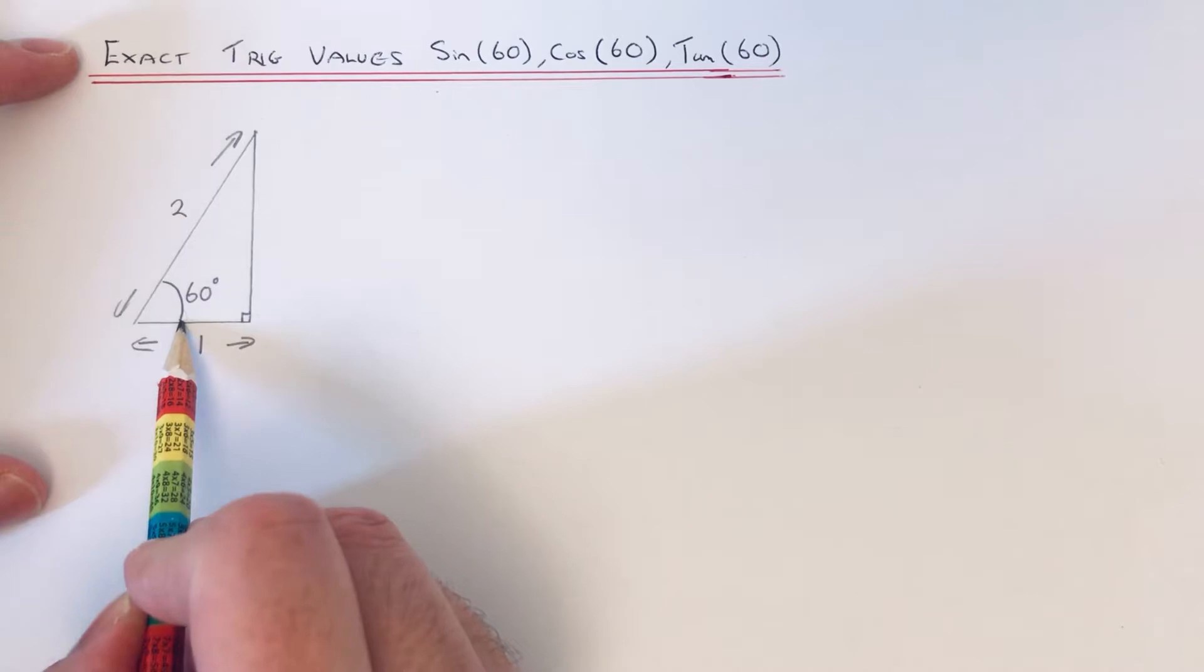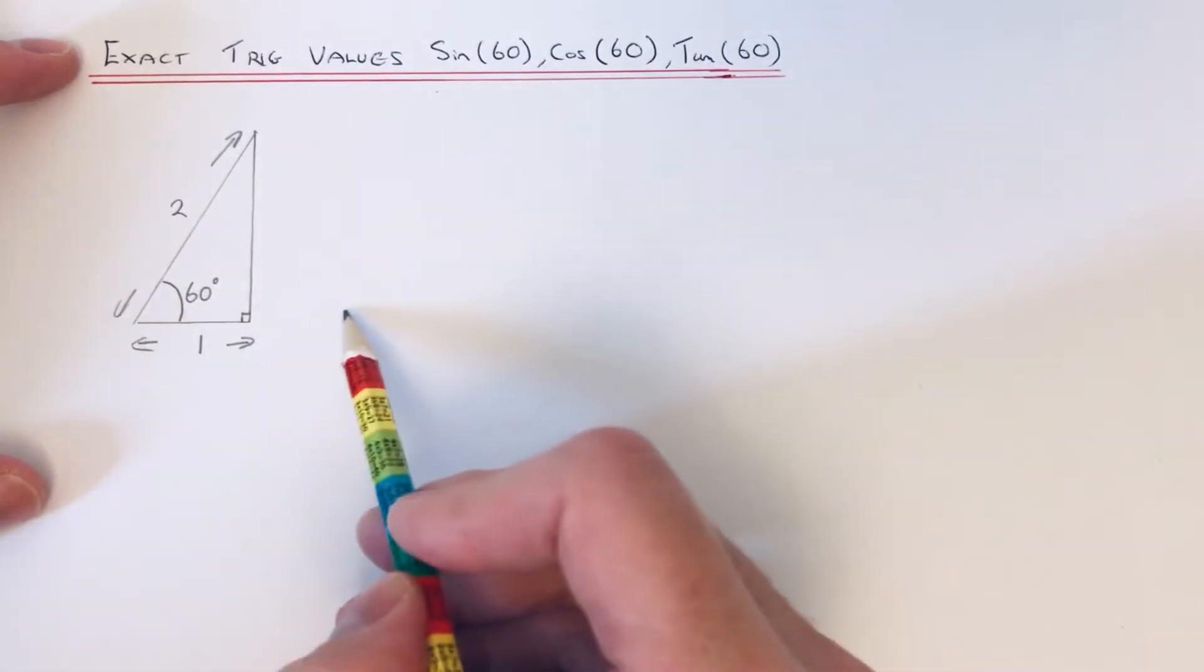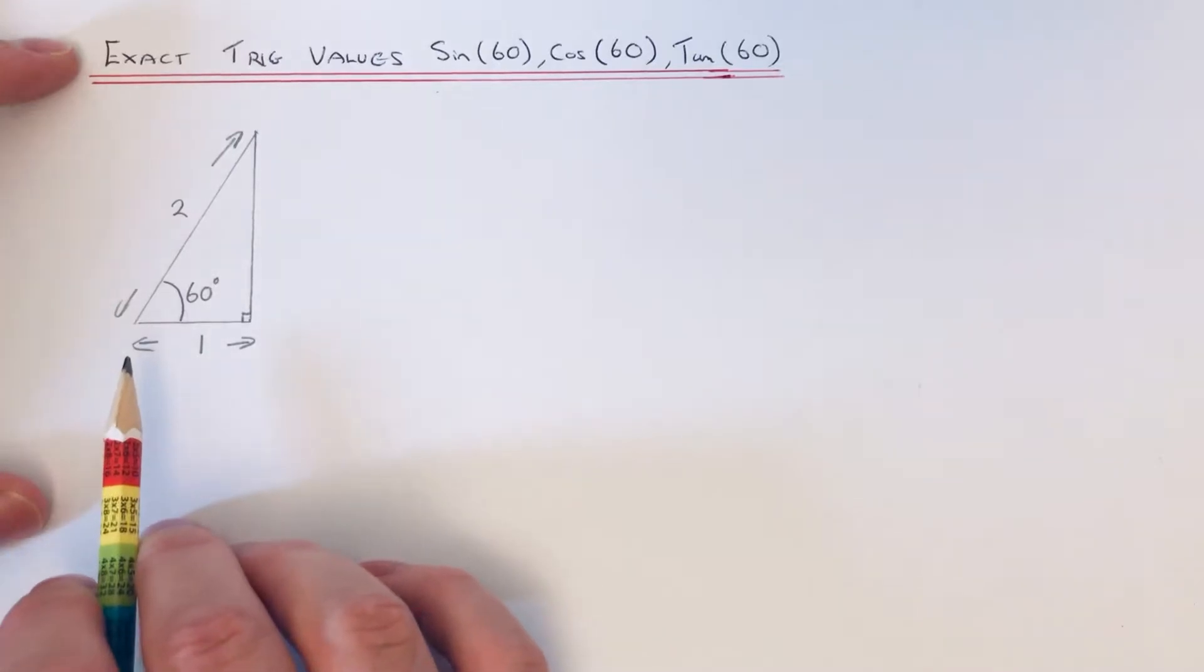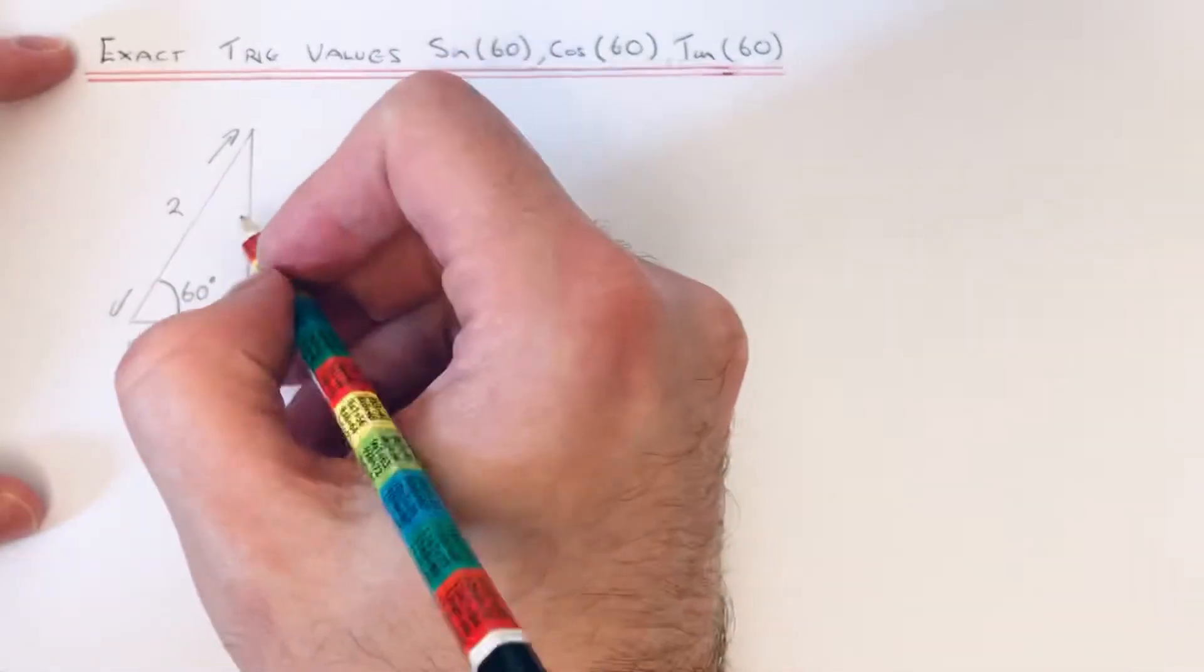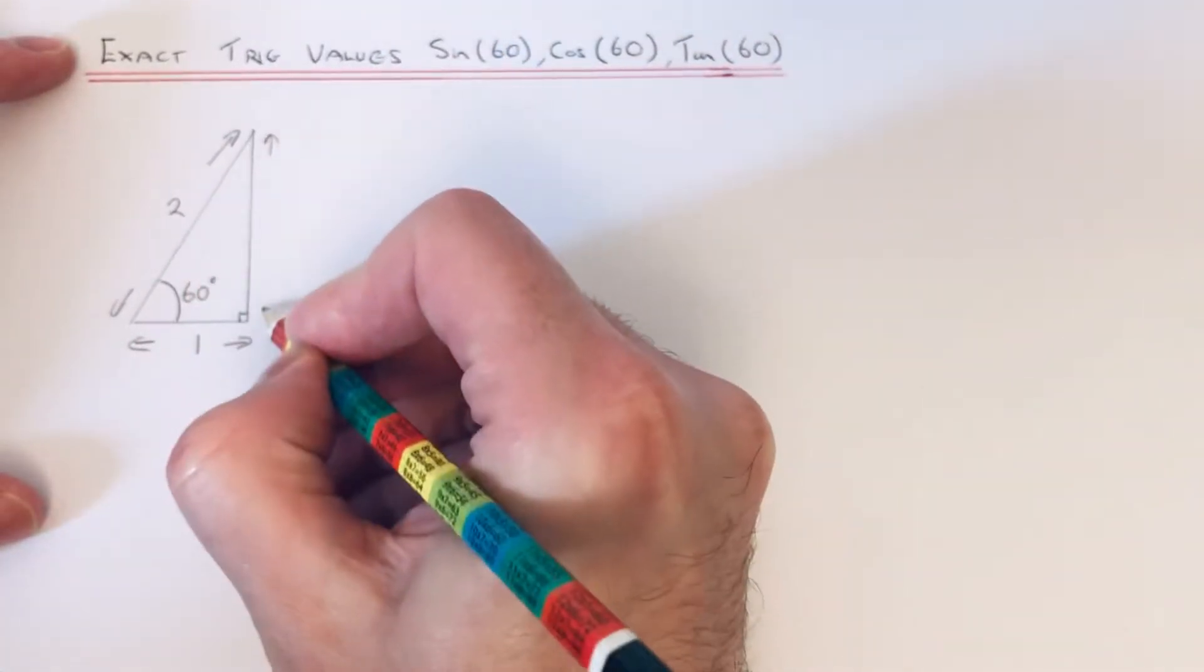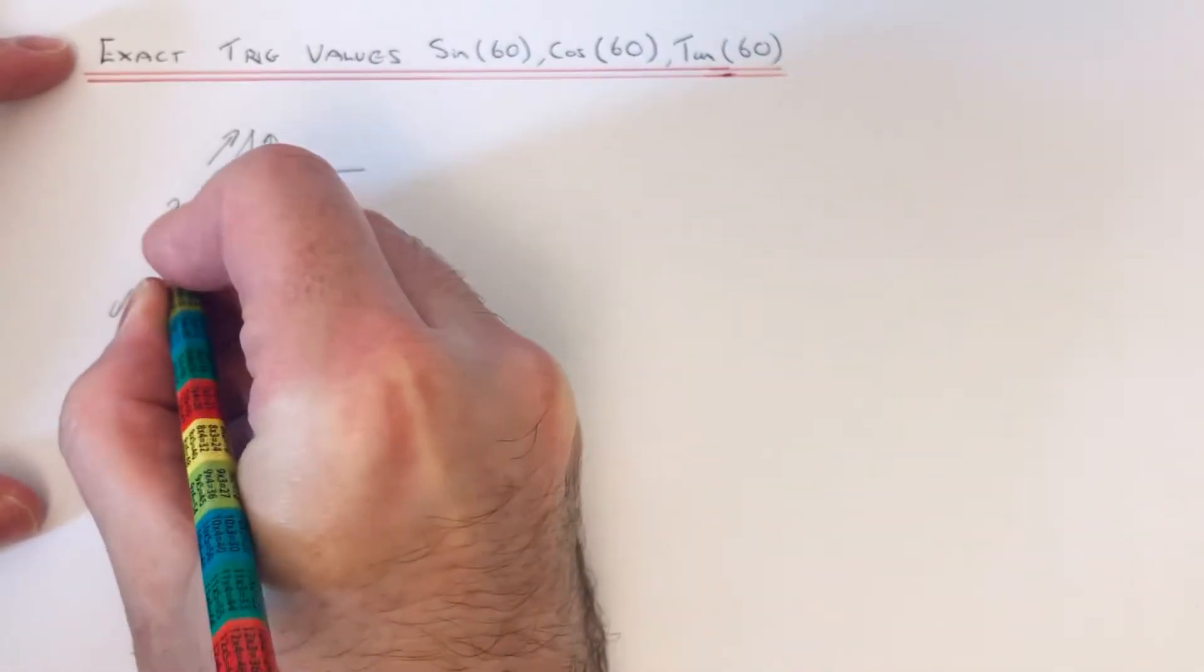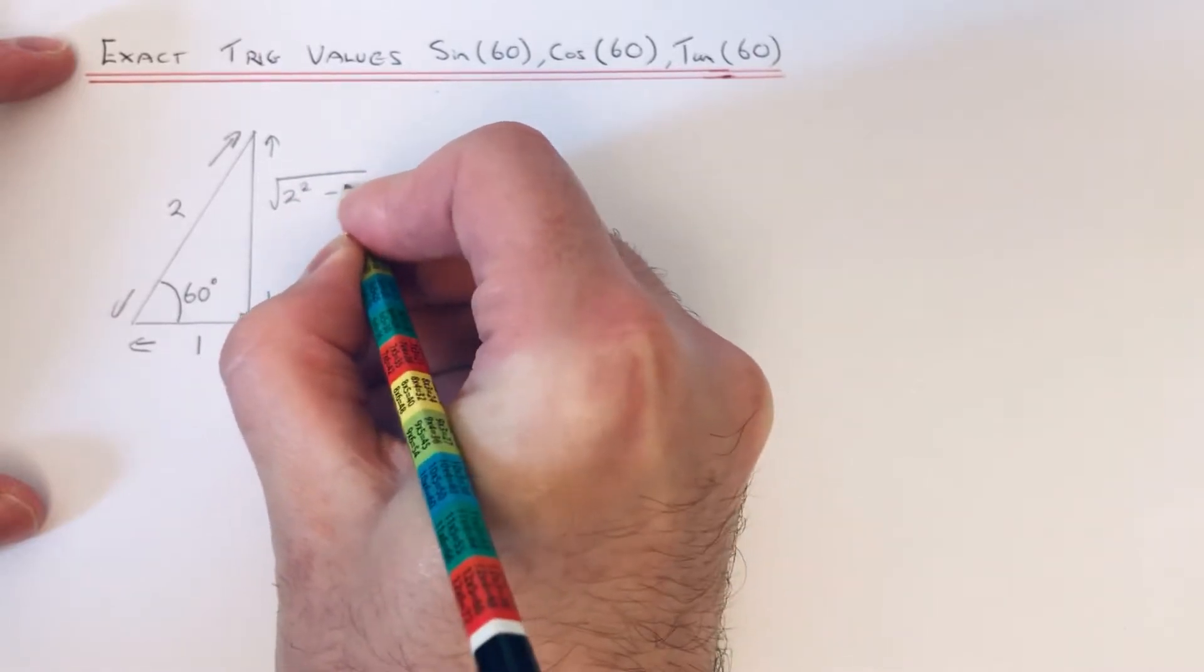The reason for this is because we've split an equilateral triangle into two. Let's use Pythagoras then to work out our third side. So the third side would be the square root of 2 squared minus 1 squared, so that will give us root 3.